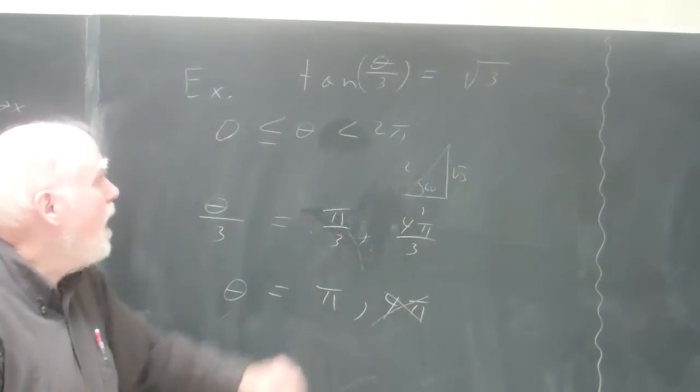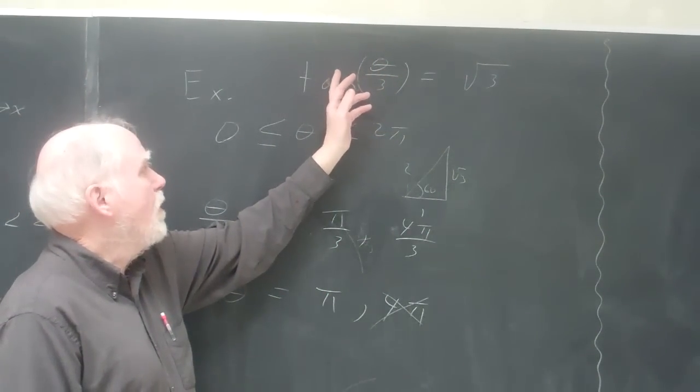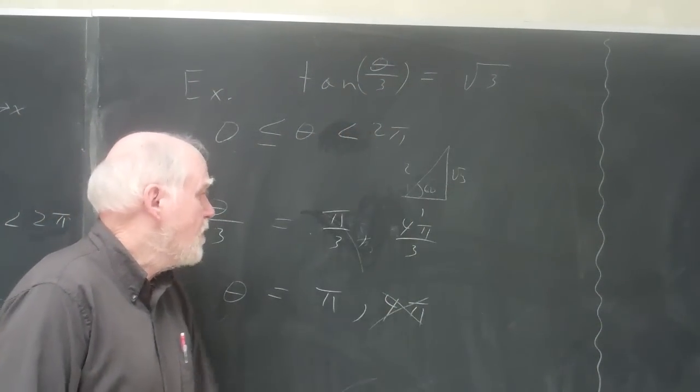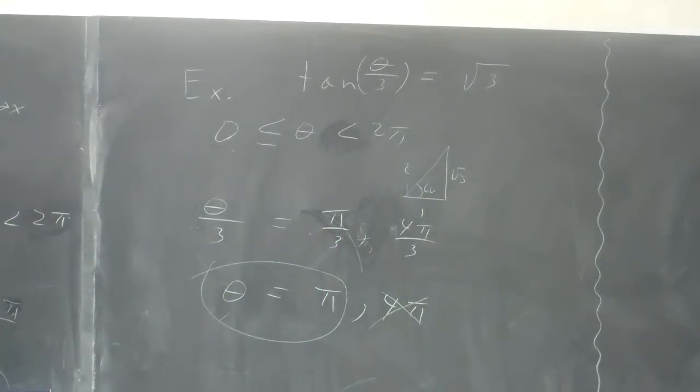But we've just restricted ourselves to what theta between 0 and 2 pi will tangent of theta over 3 give us the square root of 3. And there's only one answer, and that's it right there.